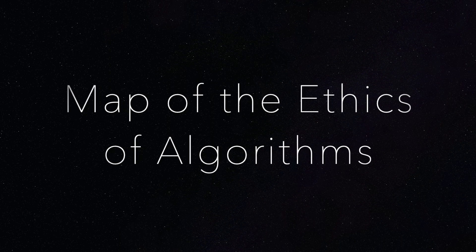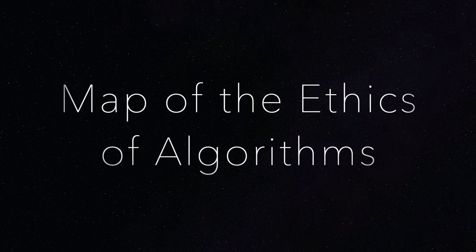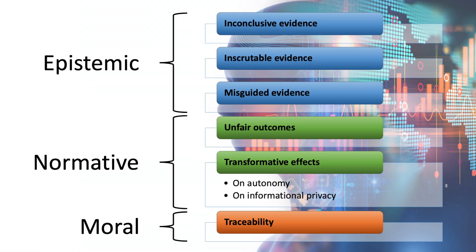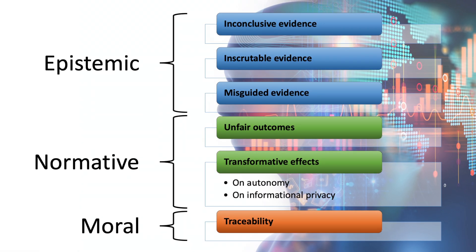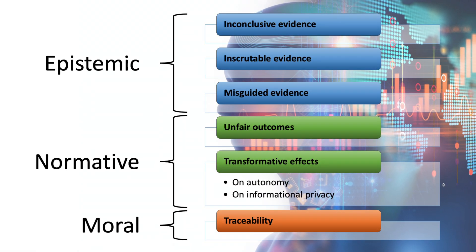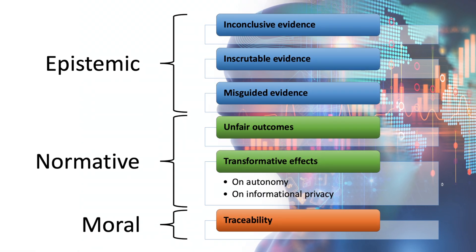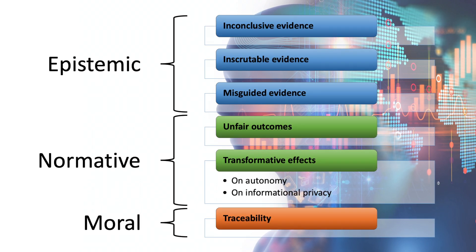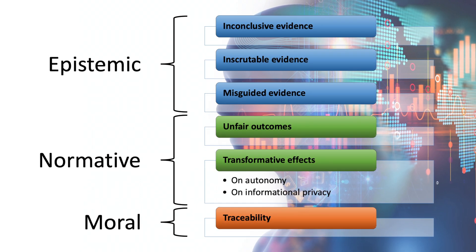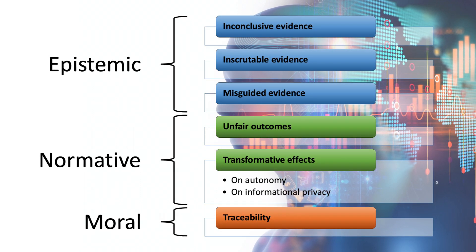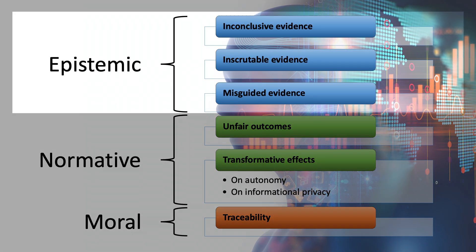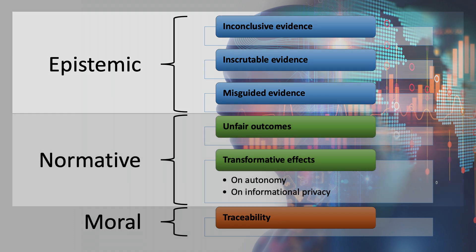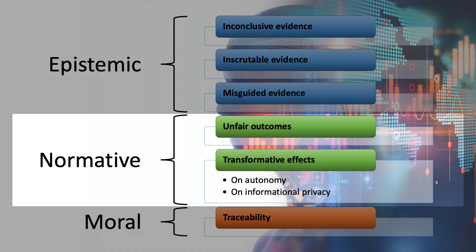Our analysis about the ethics of algorithms will focus on seven types of concerns which are associated with the consequences of potential failures. Ethical concerns span three different dimensions: epistemic, normative, and moral.